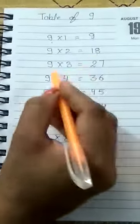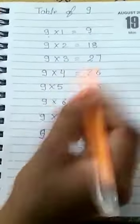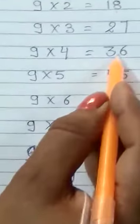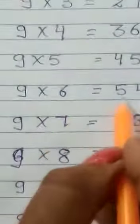Okay, one time revise. 9 1's are 9. 9 2's are 18. 9 3's are 27. 9 4's are 36. 9 5's are 45. 9 6's are 54.